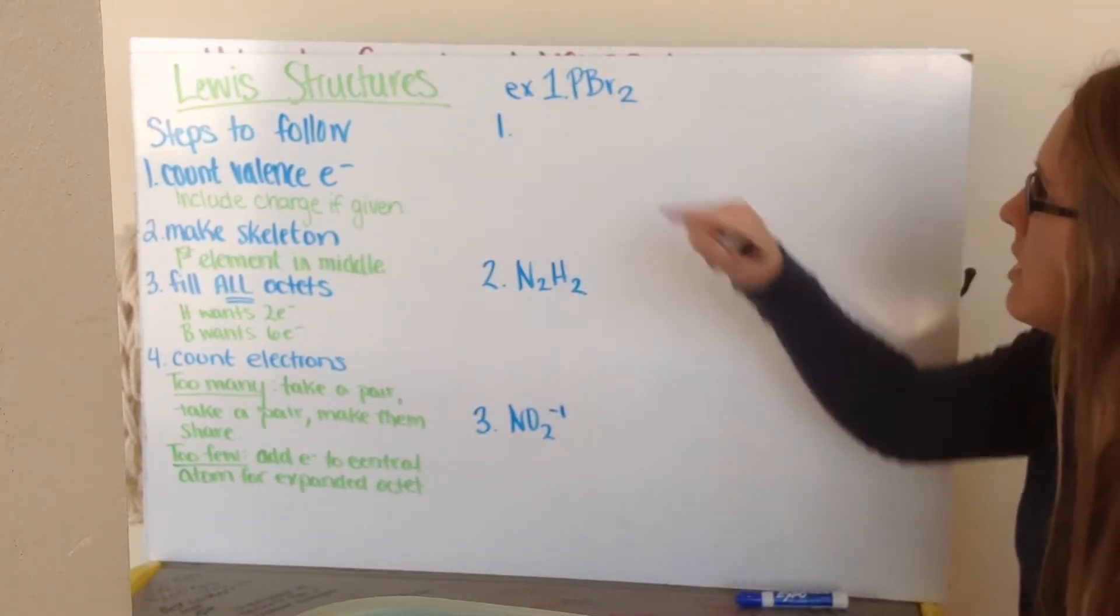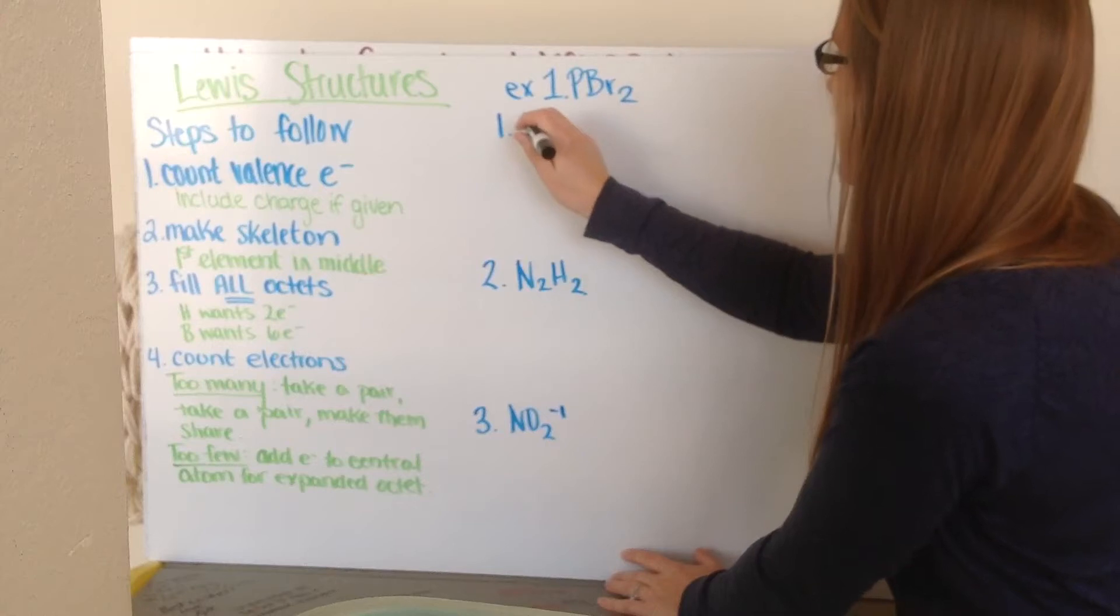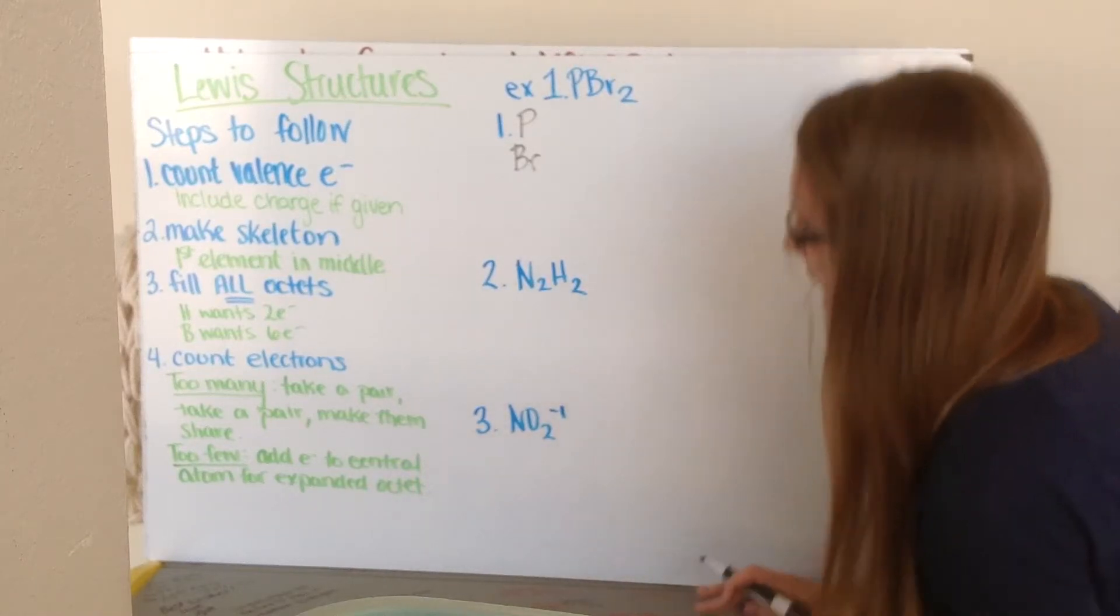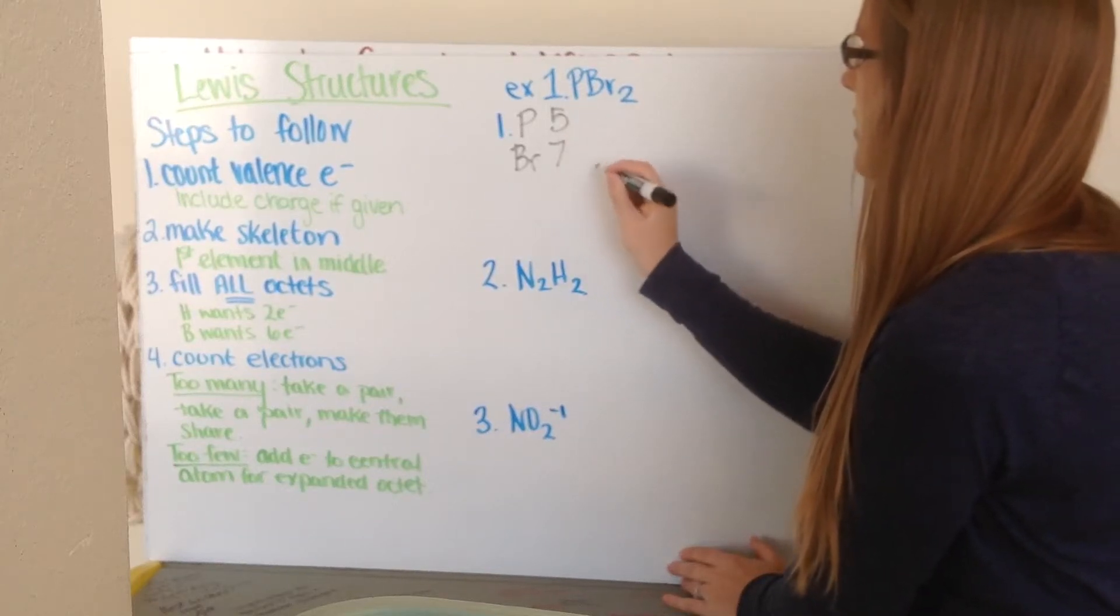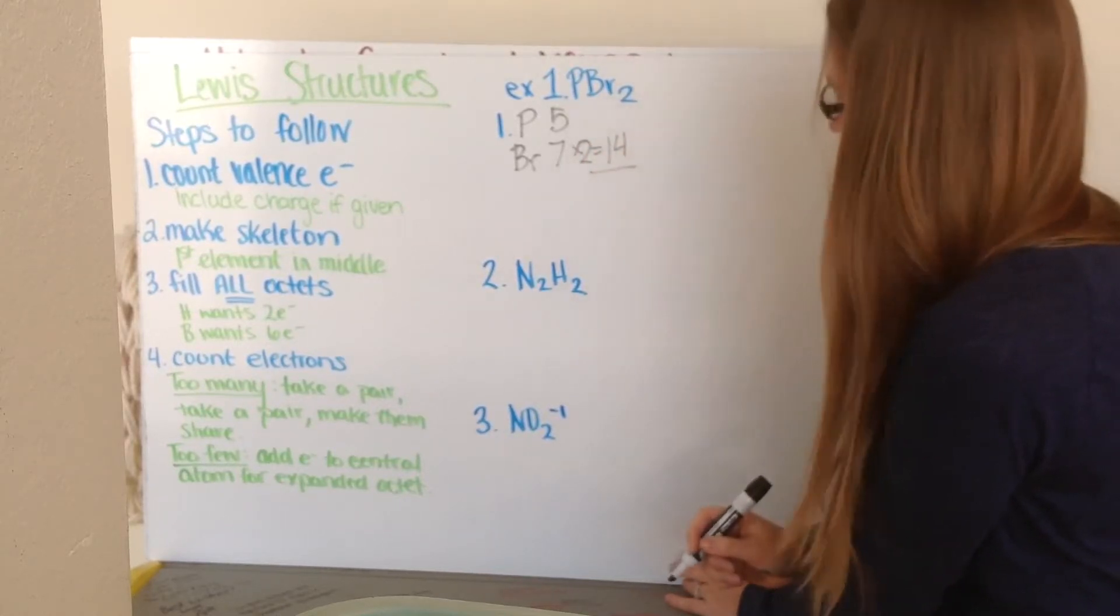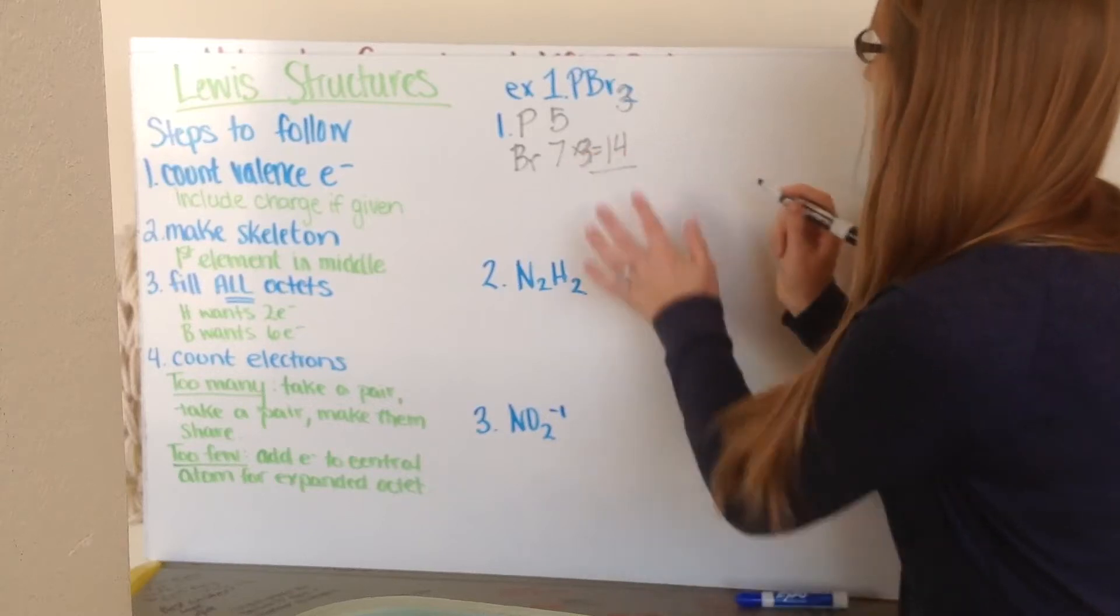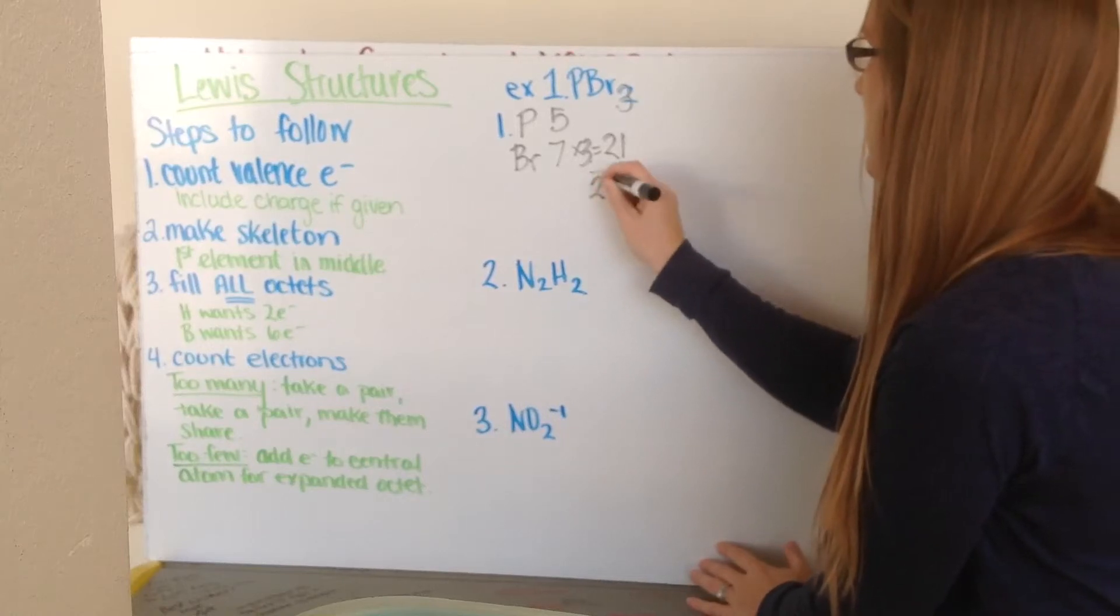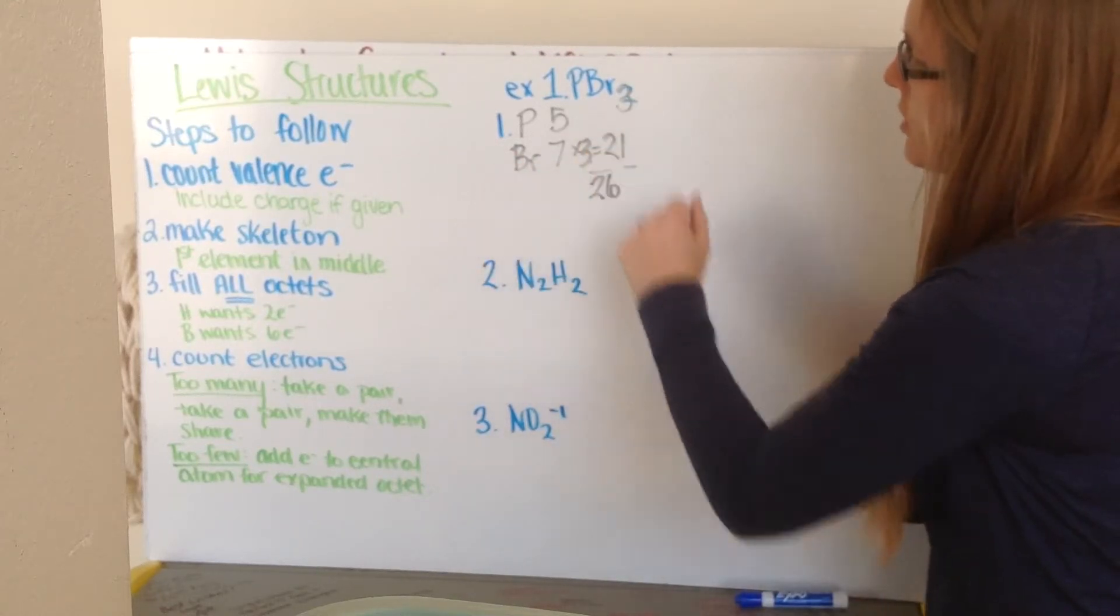So example number one, I have PBr3, or Phosphorus Tribromide. So the first thing I'm going to do is count my valence electrons. So I like to write them in a column with Phosphorus and then bromine. Now Phosphorus is in group 5, so it's going to have 5 valence electrons. Bromine is in group 7, so it has 7 valence electrons, and I have 3 of them, so I multiply that by 3. So 7 times 3 is 21. So 21 plus 5 is 26 total electrons is the number of electrons I have to work with. So that's step 1, my valence electrons. I don't have a charge, so I don't have to worry about that.